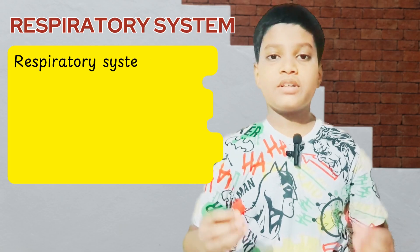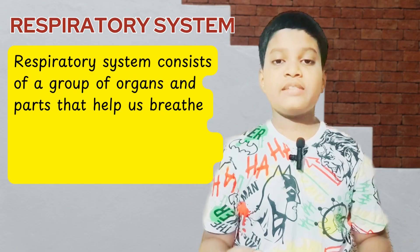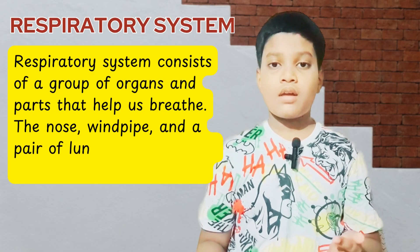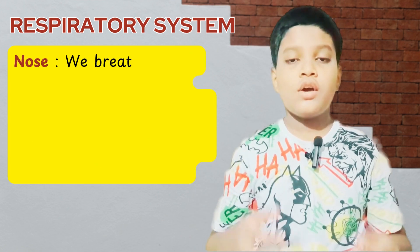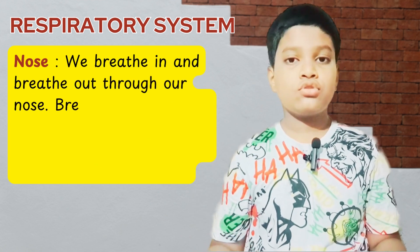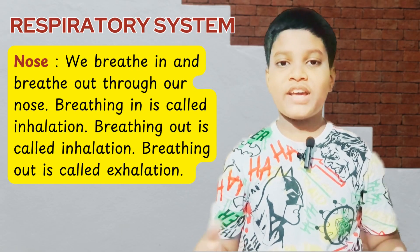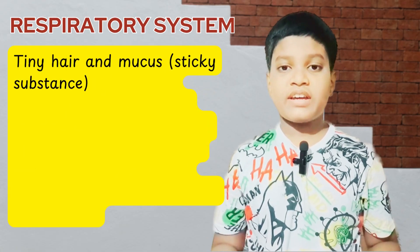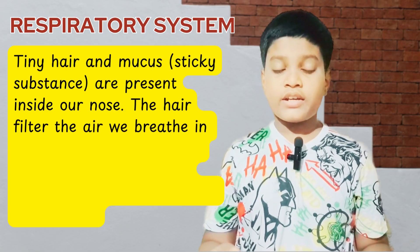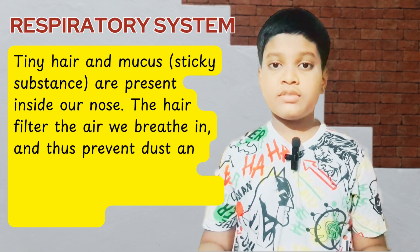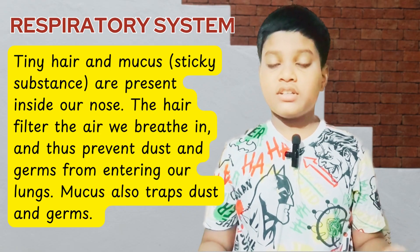The respiratory system consists of a group of organs and parts that help us to breathe. The nose, windpipe and a pair of lungs are the organs of the respiratory system. We breathe in and out through the nose. Breathing in is called inhalation; breathing out is called exhalation. Tiny hair and mucus are present inside our nose. The hair filters the air that we breathe in and thus prevents dust and germs from entering our nose. Mucus also traps dust and germs.